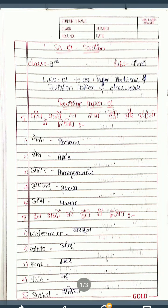First question: Panch falon ka naam Hindi aur Angrezi mein likhiye — write any five fruit names in Hindi and English. Kela means banana — B-A-N-A-N-A. Seb means apple — A-P-P-L-E. Anar means pomegranate — P-O-M-E-G-R-A-N-A-T-E. Amrood means guava — G-U-A-V-A. Aam means mango — M-A-N-G-O.